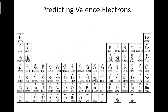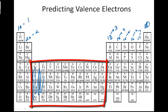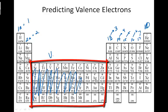We can predict valence electrons from the periodic table very simply. Group 1A has 1, Group 2A has 2, Group 13 has 3, Group 14 has 4. Remember, transition metals have a varied number, so we're not going to be able to predict them as easily.